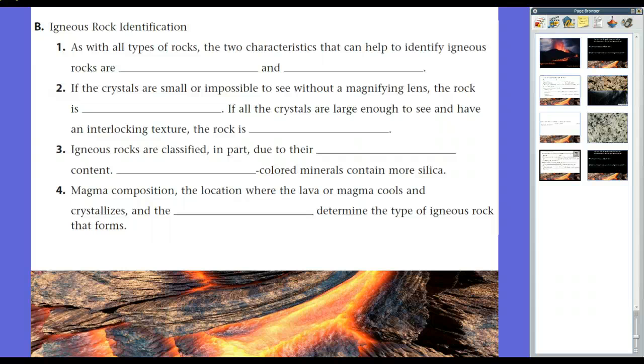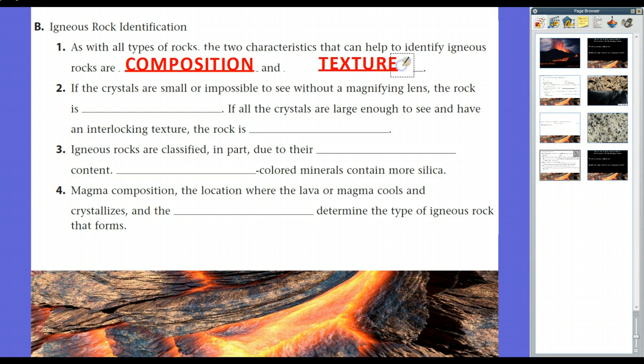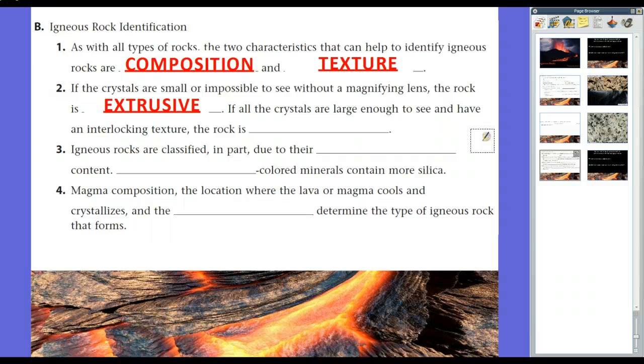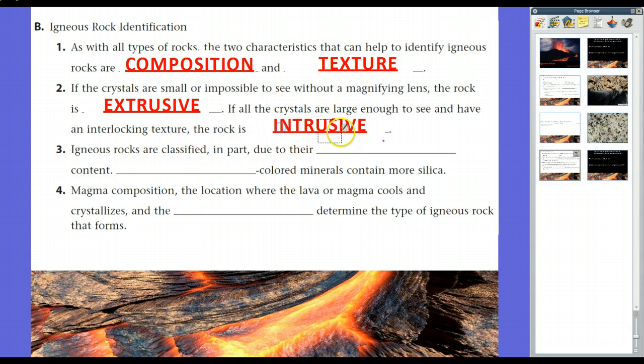Now, as with all types of rocks, the two characteristics that can help identify igneous rocks are, of course, texture and composition. Texture and composition are the two ways we identify rocks, and just like any other type of rock, we can do that with igneous rocks. If crystals, like I just said, if they're small or impossible to see without a magnifying glass, then they are extrusive because they didn't have time to grow. If all the crystals are large enough to see and have an interlocking texture, in other words, it's like they interlock like Lego pieces. They all kind of fit together. They don't seem very loose. As a result, that would be intrusive because it took a long time to cool and so it had a long time to go ahead and form crystals and bond together.